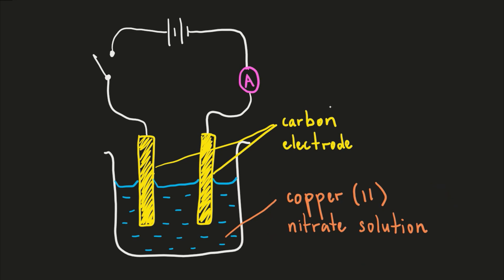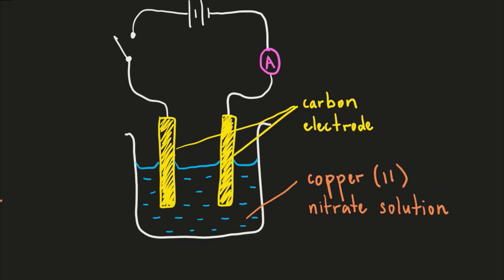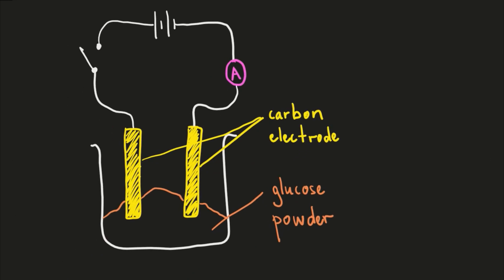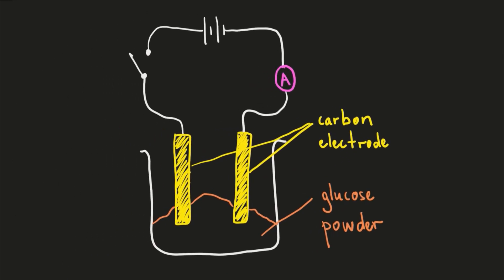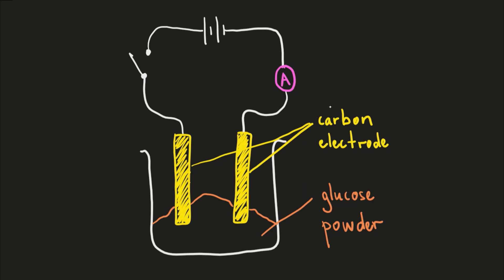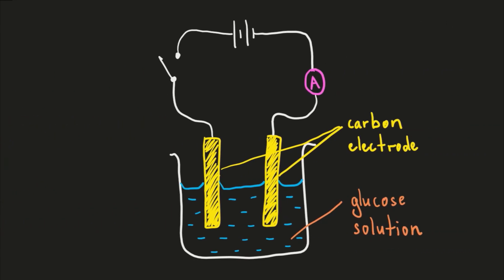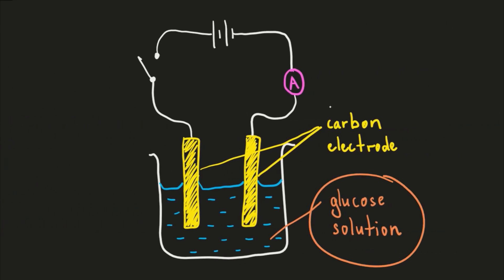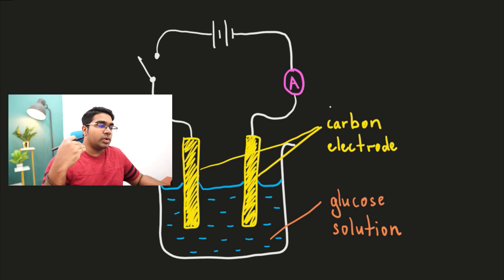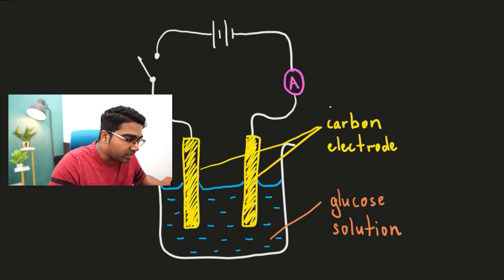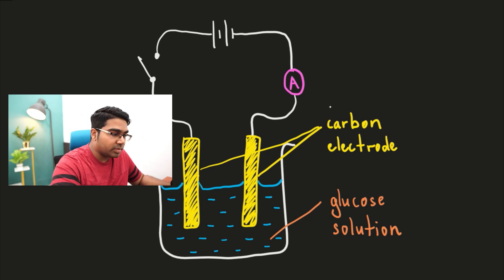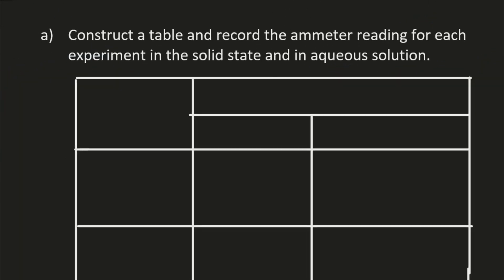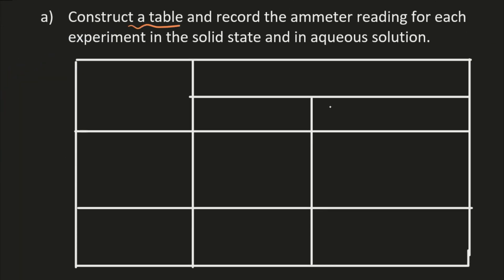For the covalent compound, in this question we're going to use glucose. First we use glucose powder — we want two states, solid state — and then we add water to form glucose solution. Experimentally, you set it up, conduct the experiment, take the readings, construct a table, and record the ammeter reading for each experiment.